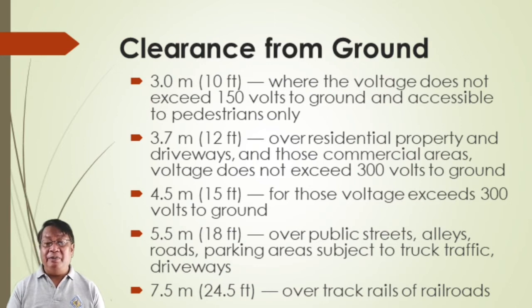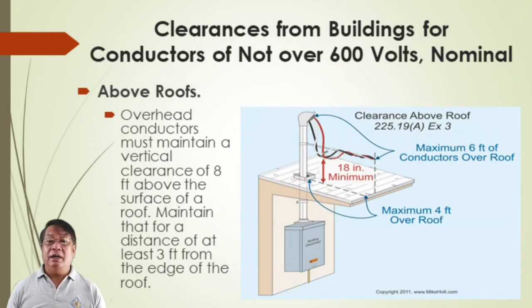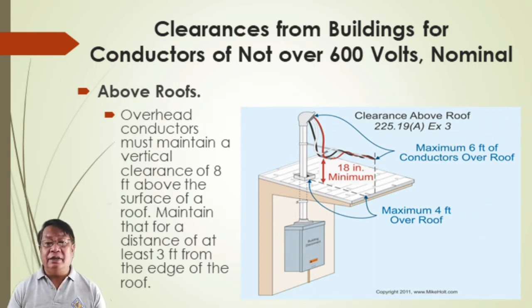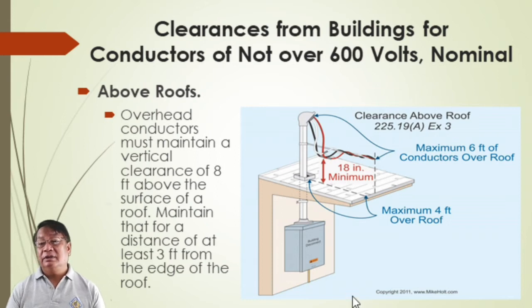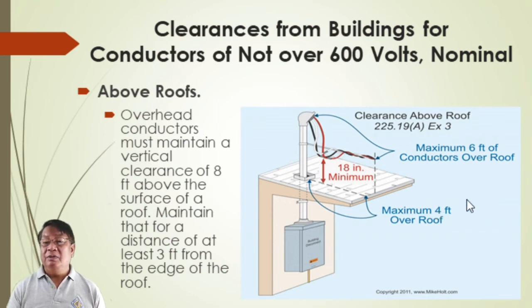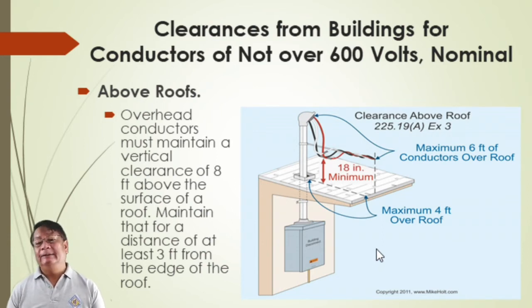For conductors of not more than 600 volts nominal, overhead conductors must maintain a vertical clearance of 8 feet above the surface of a roof for a distance of at least 3 feet from the edge of the roof. Maximum 6 feet of conductors over roof, maximum 4 feet over roof in certain configurations. That is how you will install your mast.